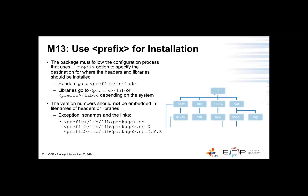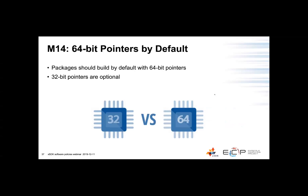Moving on to policy number thirteen, we ask to honor the prefix for installation. The dash-dash prefix option allows system administrators or automated package management systems such as Spack to put the library and header files in any place of the file system. We also ask in this policy that version numbers should not be included with the headers or the libraries, unless we do it for dynamic libraries where the sonames include minor, major, and patch levels in the library name. Moving to policy number fourteen, we require that by default 64-bit pointers are built with the package and 32-bit pointers are only built optionally.